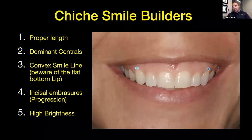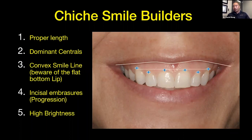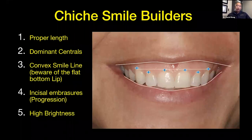So regarding proper tooth length: the centrals and the canine should be at the same level as far as the gingival zenith; the lateral should be slightly lower. You want centrals dominant, a convex smile line — that gold wing effect we talked about, referring to both the upper lip as well as the gingival margins — and then a curved lower lip. That's kind of what we want when looking at smiles.